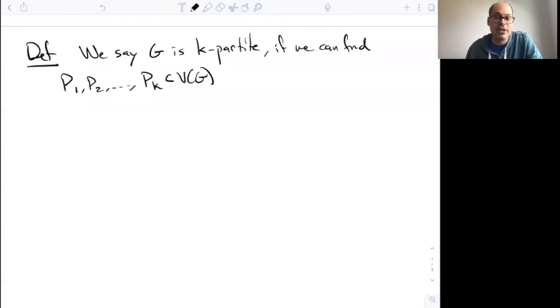So the notion of k-partite should come as no surprise. We say that a graph is k-partite if we can find some subsets of the set of vertices, such that the union of all of them, I equals one to k of these PI, is the whole vertex set. And they're mutually disjoint, PI intersect PJ is empty, for all I not equal to J.